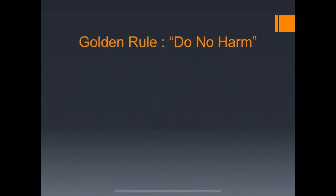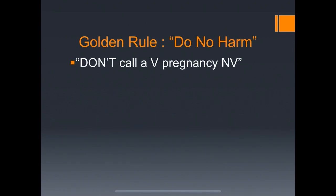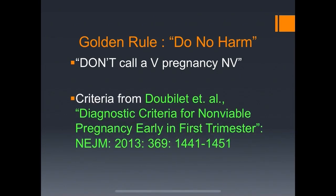The golden rule in medicine is do no harm. In this case, we don't want to call a viable pregnancy non-viable. So what I'll be using are criteria from Dubillet, from a 2013 New England Journal of Medicine article, to determine non-viability in early pregnancy. There are five key numbers from that article.